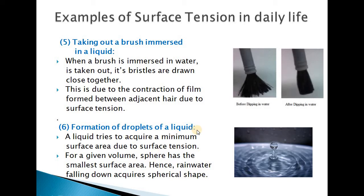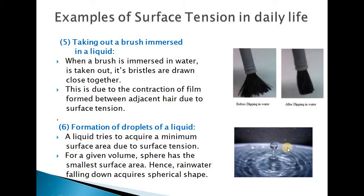The next example is the formation of droplets of a liquid. The droplets of water or any other liquid are nearly spherical in shape. Why do they acquire this spherical shape? Because due to the force of surface tension, the liquid surface tries to acquire a minimum surface area. Due to the force of attraction among the molecules, this drop surface tends to acquire the minimum surface area, and for a given volume, the sphere has the smallest surface area. That is why rainwater falling down acquires a spherical shape.